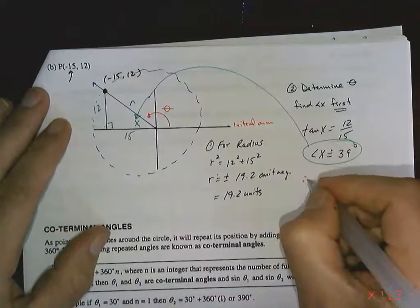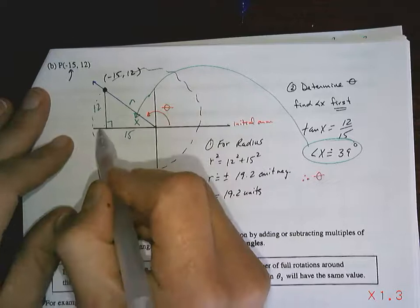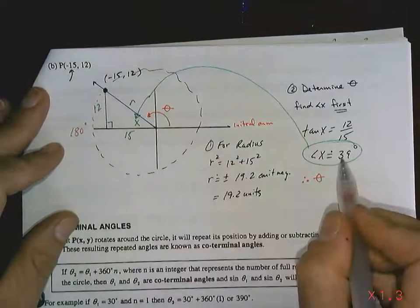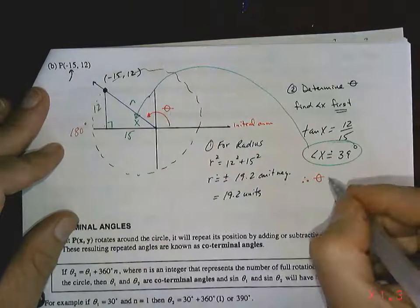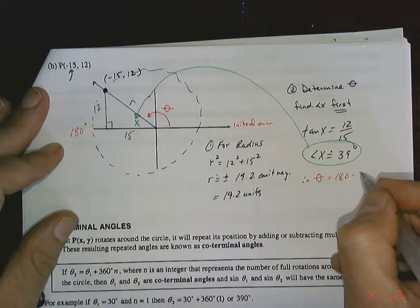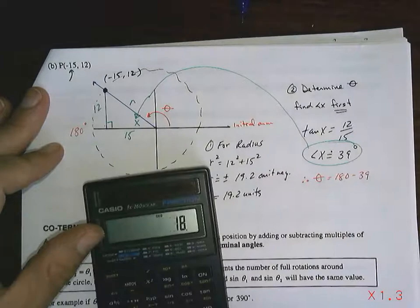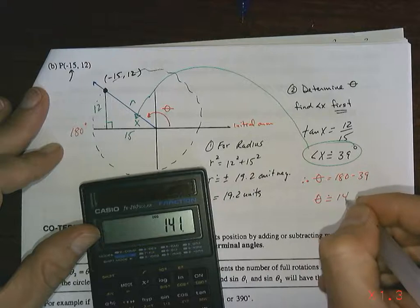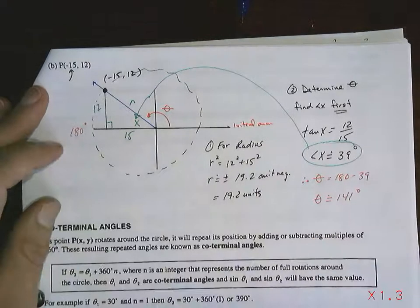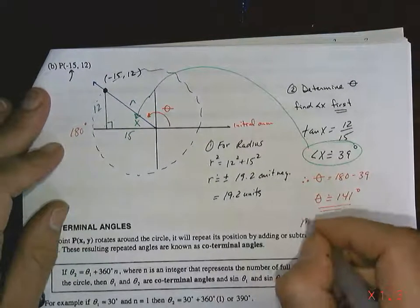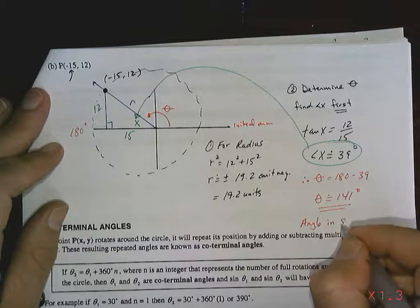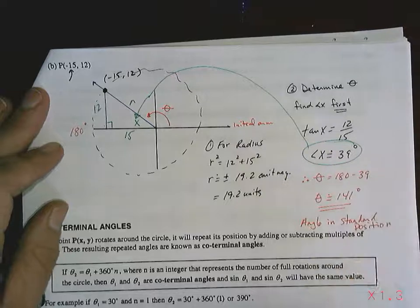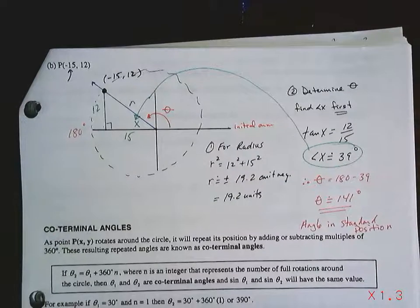So therefore, theta, if I was to go all the way around it would be 180 degrees, right? This little bit is 39 degrees. So theta must be 180 minus 39, and it equals approximately 141 degrees. And that is the angle in standard position. Okay, I'm going to stop there. I'm going to be right back.